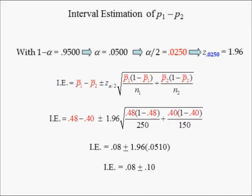Simplifying results in 0.08 plus or minus 1.96 times the standard error of the differences in proportions, which is 0.0510. The interval estimate is equal to 0.08 plus or minus the margin of error of 0.1. Hence, the 95% confidence interval ranges from negative 0.02 to 0.18. Since this interval contains 0, we would conclude that the ad campaign seems to have failed to increase awareness.